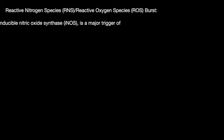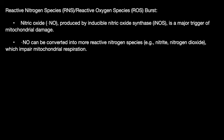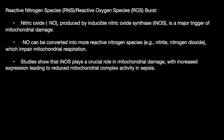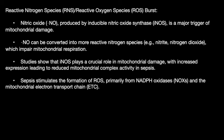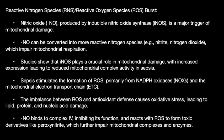The first and most important mechanism is the reactive nitrogen and reactive oxygen species burst. Nitric oxide produced by inducible nitric oxide synthase is a major trigger of mitochondrial damage. This is converted into more reactive nitrogen species when impaired mitochondrial respiration occurs. Studies show that inducible nitric oxide synthase plays a crucial role in mitochondrial damage, with increased expression leading to reduced mitochondrial complex activity in sepsis. Sepsis stimulates formation of reactive oxygen species primarily through NADPH oxidase and the mitochondrial electron transport chain. The imbalance between these leads to lipid, protein, and nucleic acid damage. Nitric oxide binds to complex 4, inhibiting its function, and reacts with reactive oxygen species to form toxic derivatives that further impair mitochondrial complexes and enzymes.